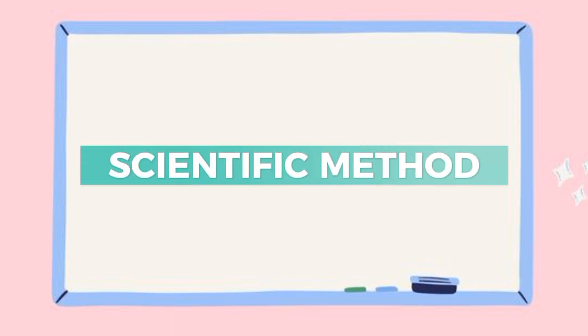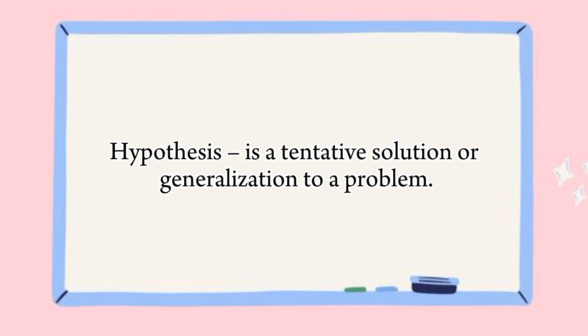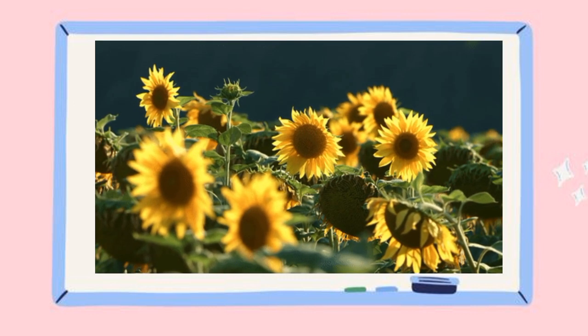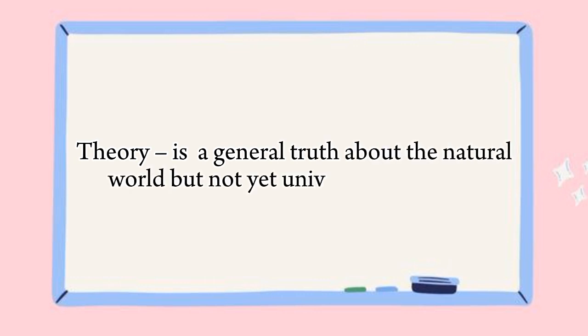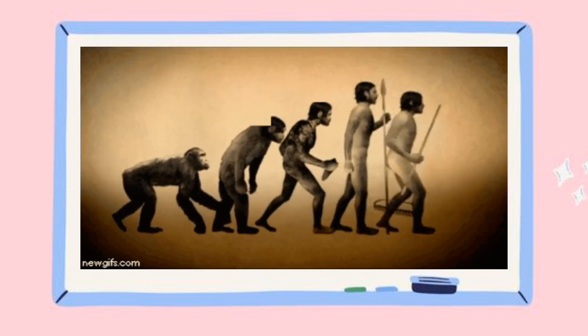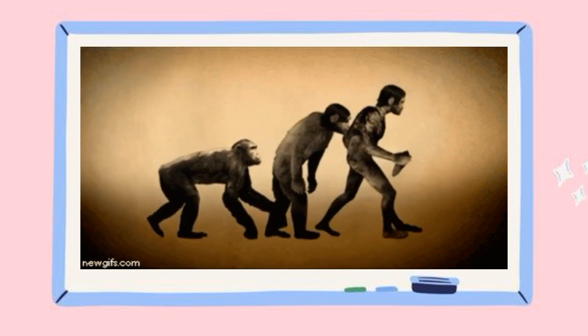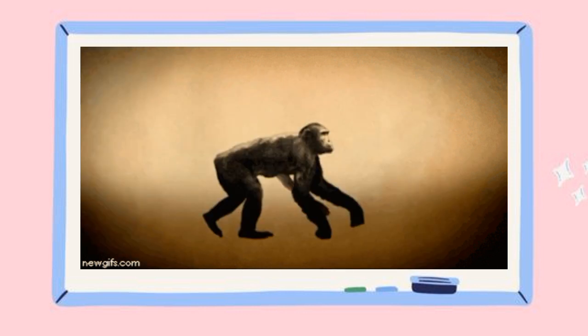Next topic is the scientific method. The scientific method is a process used by scientists to understand the world around us. It involves making observations, coming up with a hypothesis, testing the hypothesis through experiments or observations, and then using the results to refine our understanding of the world. A hypothesis is an idea or explanation that we come up with to explain something we observe. For example, if we observe that plants grow towards light, we might hypothesize that light helps plants grow. A theory is an explanation that has been tested and supported by evidence. For example, the theory of evolution explains how species change over time through natural selection.